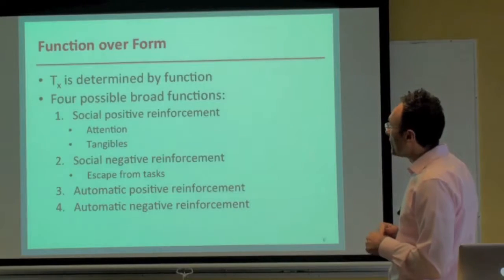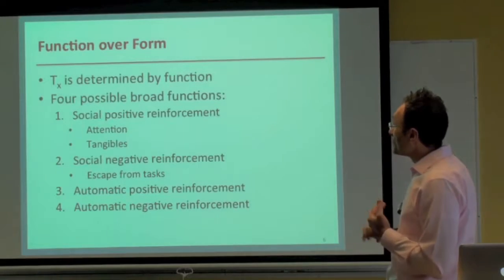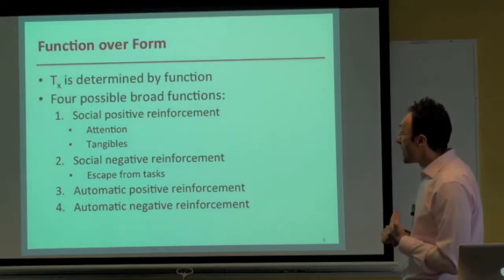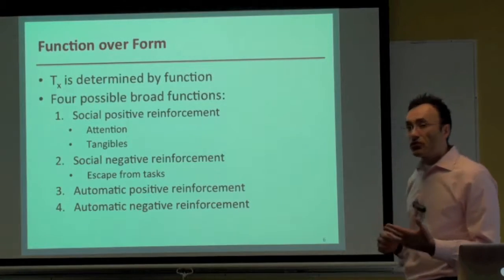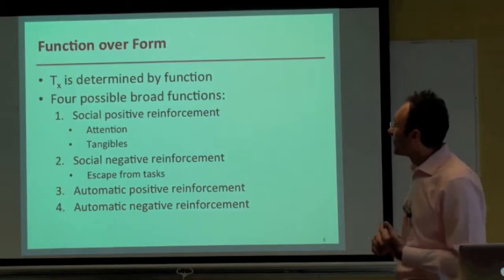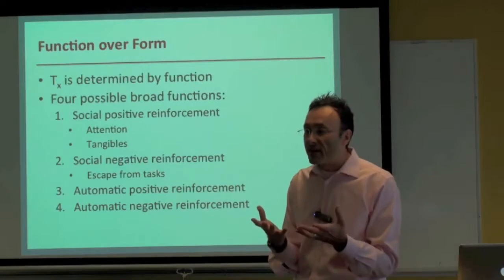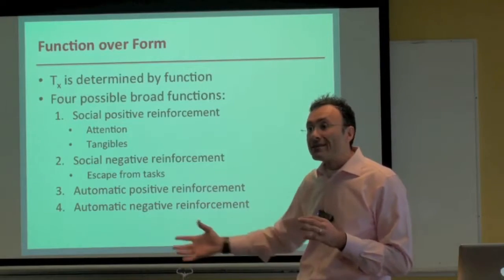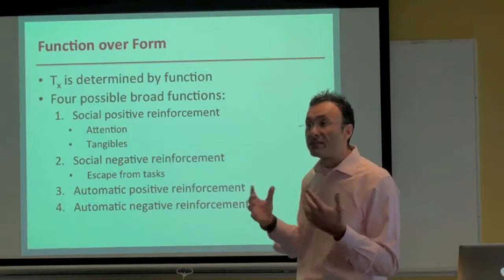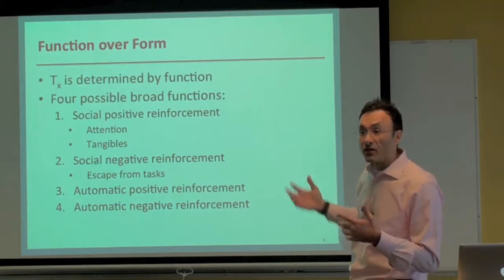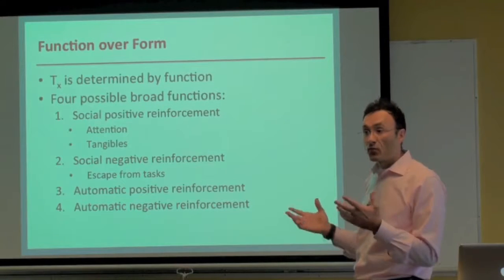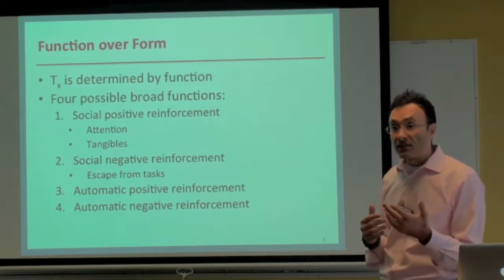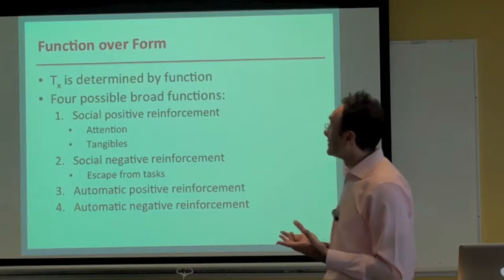There are four broad possible functions — two social reinforcers and two automatic reinforcers. Social positive reinforcement refers to a person emitting a behavior and, as a result, somebody else does something: gives them attention, high fives, praise, pats on the back, or tangibles like access to food, games, or activities.